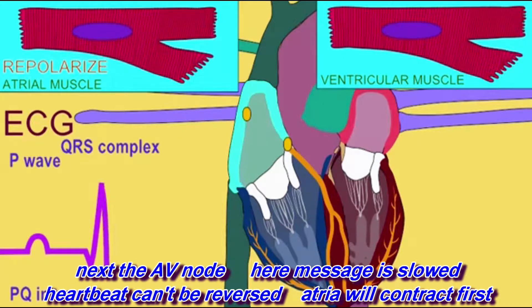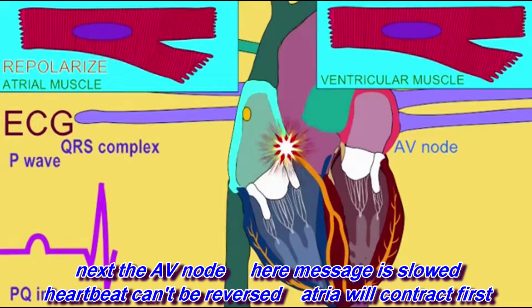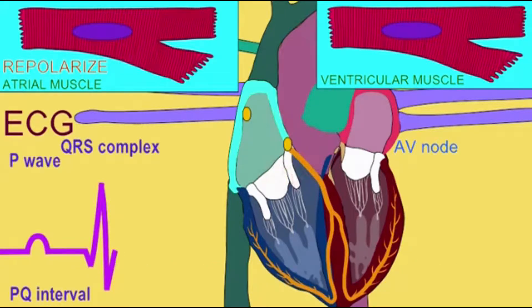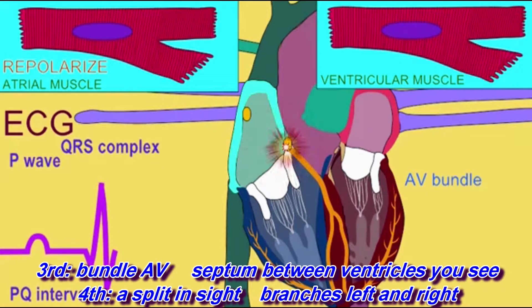Next, the AV node — here, the message is slowed. Heartbeat can't be reversed, atria will contract first. Third, bundle AV, septum between ventricles you see.